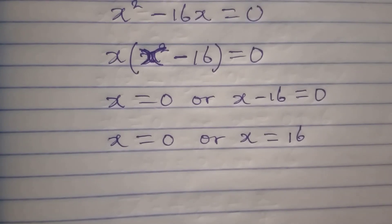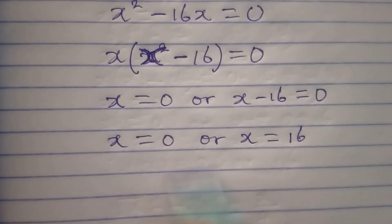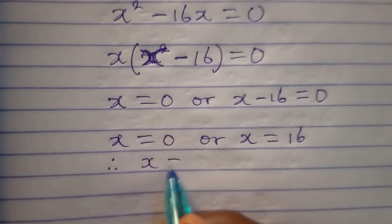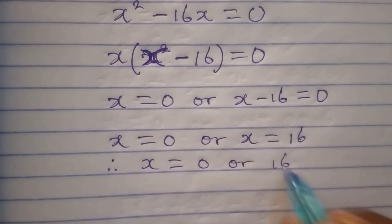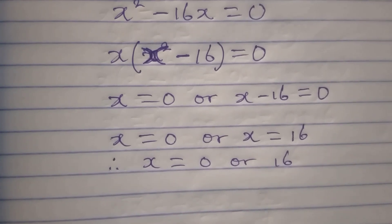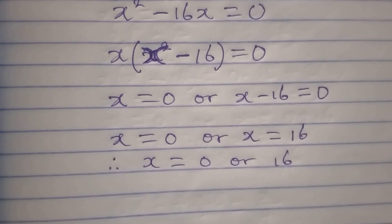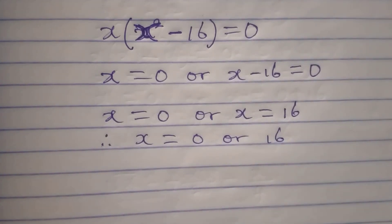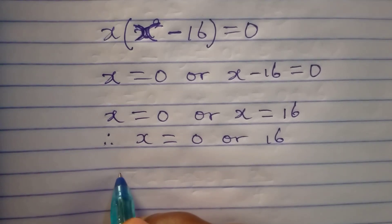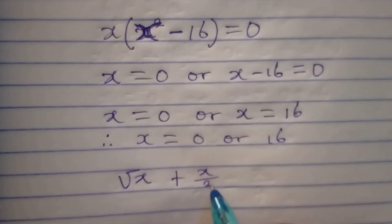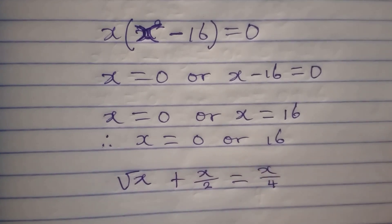Now the next thing to be done is to conclude. Therefore x is equal to zero or 16. But the question now is which of these satisfies the equation and which of them does not satisfy the equation. Let's take a look. The original equation is root x plus x over 2 equals x over 4.